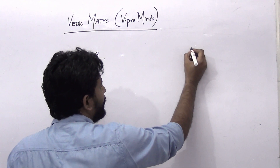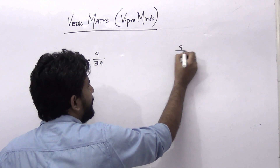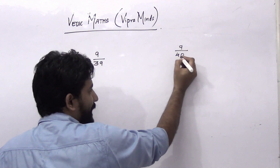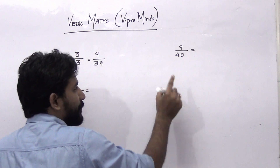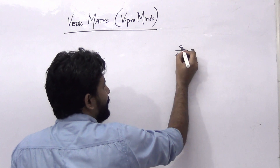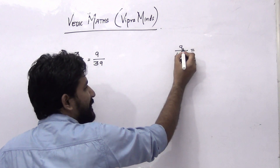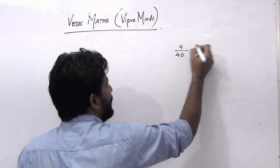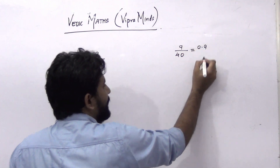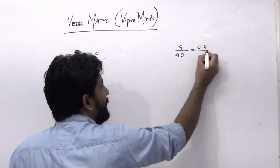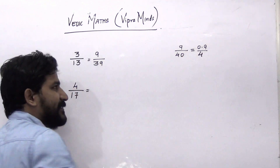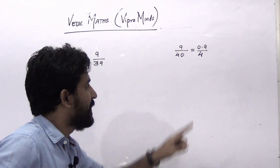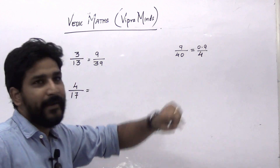So what you have to do is take 39 and increase it by 1, so it will be 40. The next step: remove this 0 and put the decimal point after 1 number, or on the left hand side. So it will be 0.9 divided by 4. Remove the 0 and shift the point on the left hand side by 1 digit — so 0.9 divided by 4.